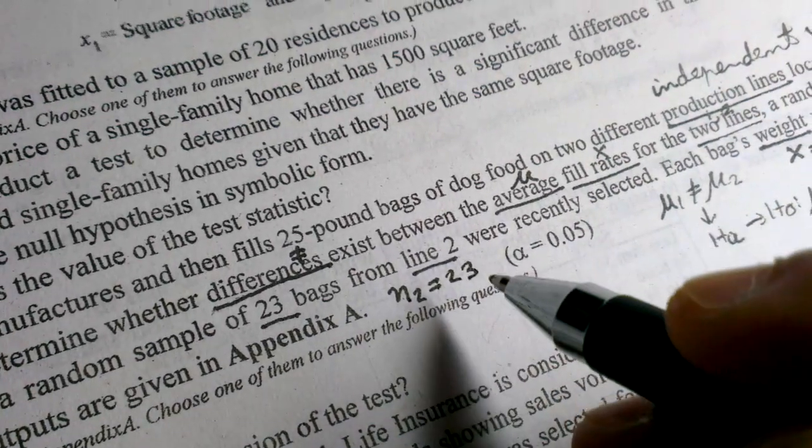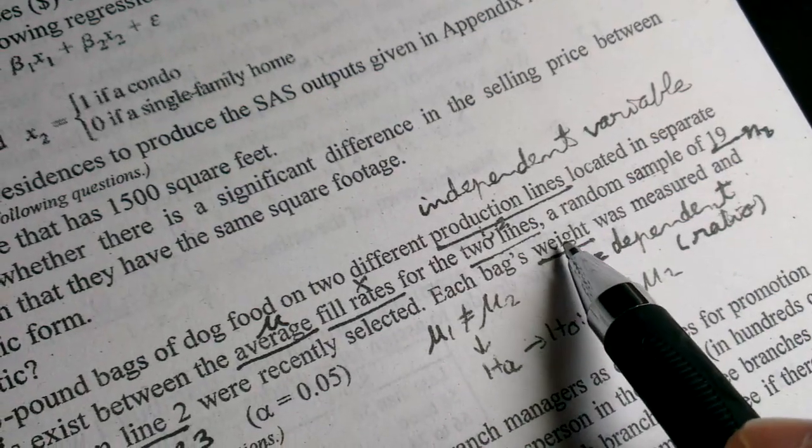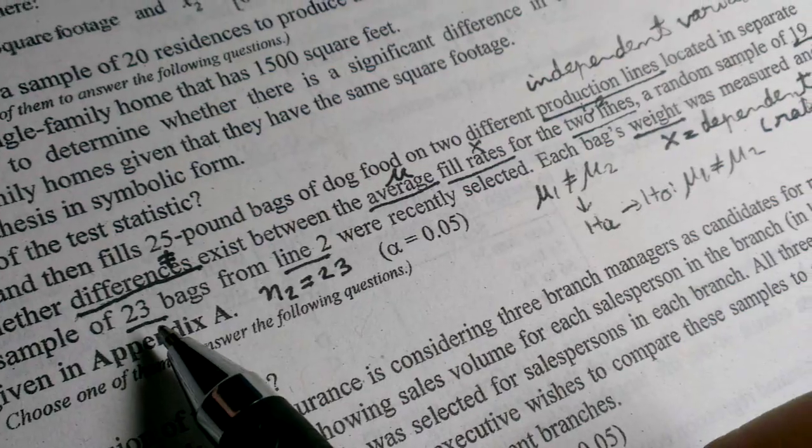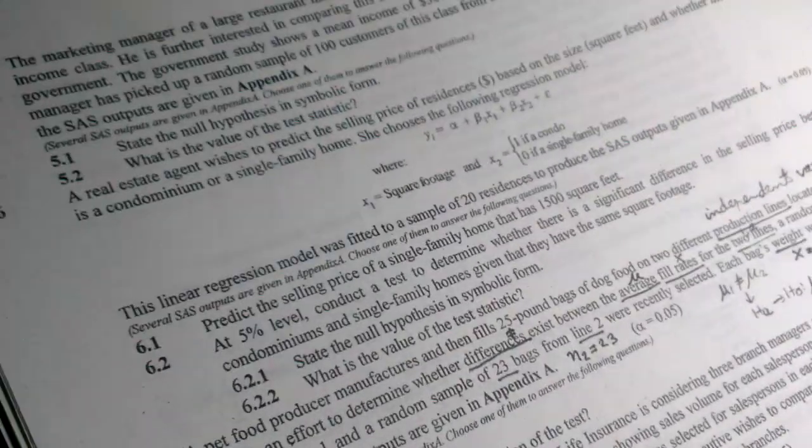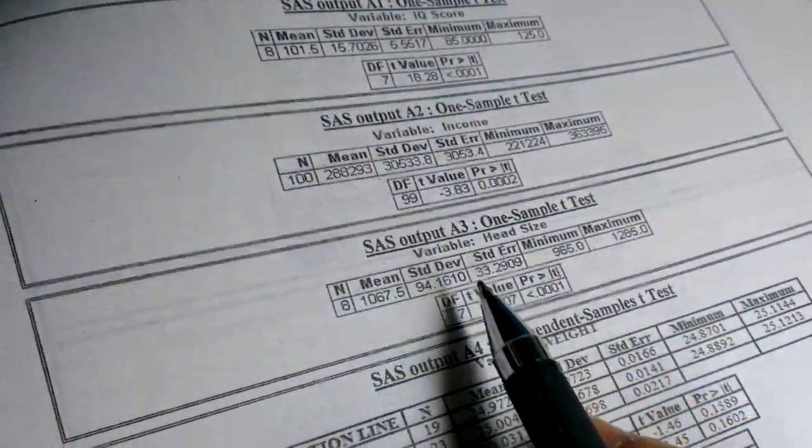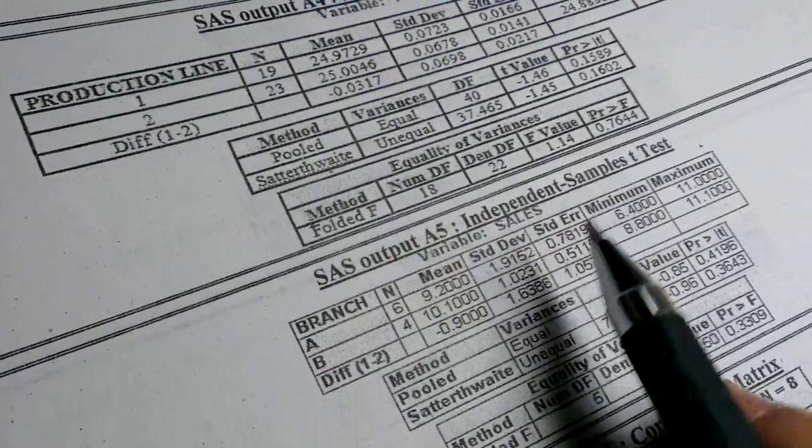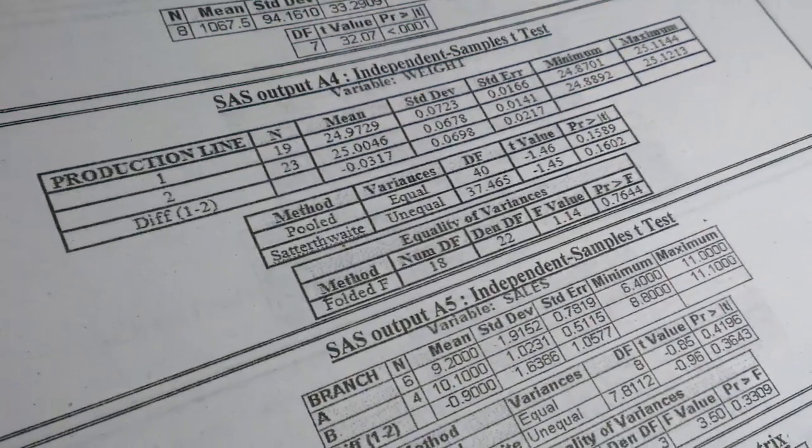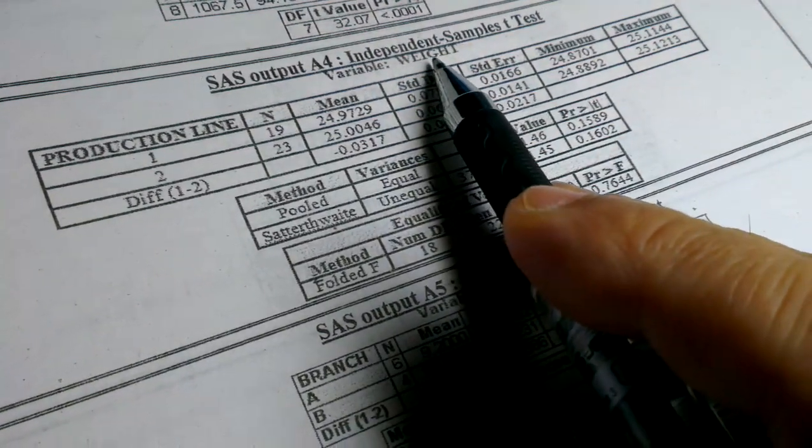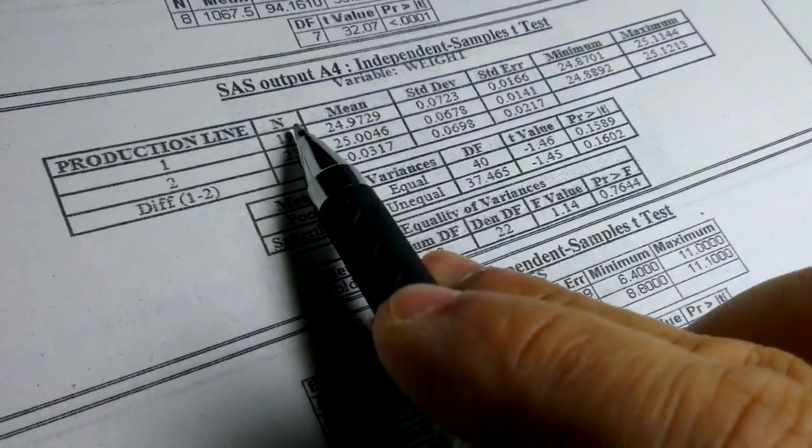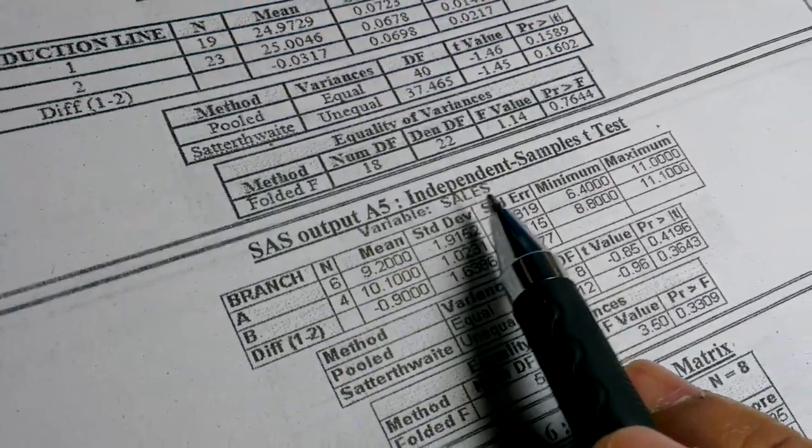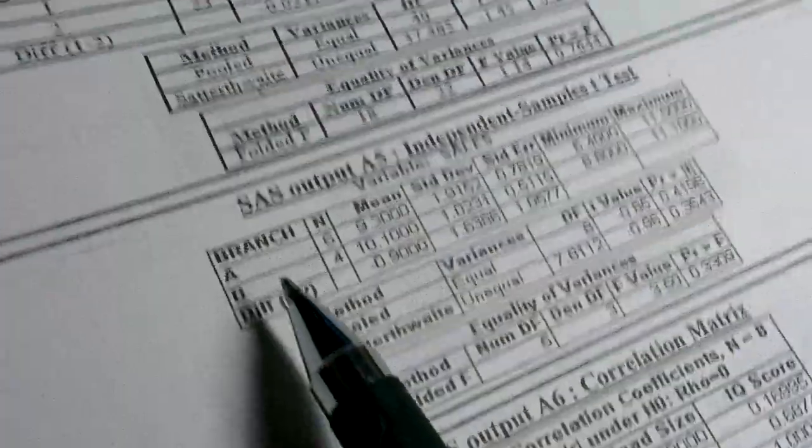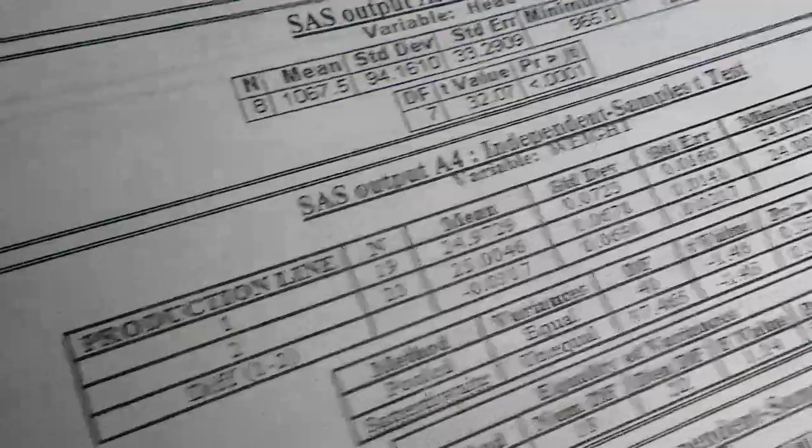And 23 bags from line 2, so n2, size of sample 2 is 23. So weight, production line, 19 and 23. Independent sample t-test. So where are the SAS outputs? On the next page if you check the list there are only two independent sample t-tests. So the first one has weight variable, production line 1 to sample sizes 19 and 23, all correct. Another one, variable sales and branch AB, not this one, so we have to select this one.